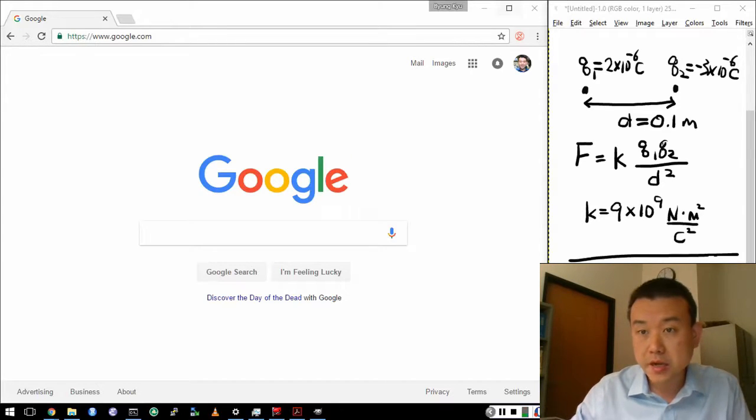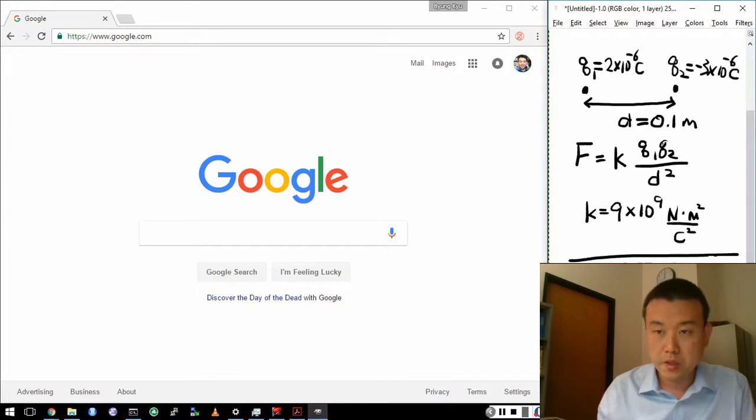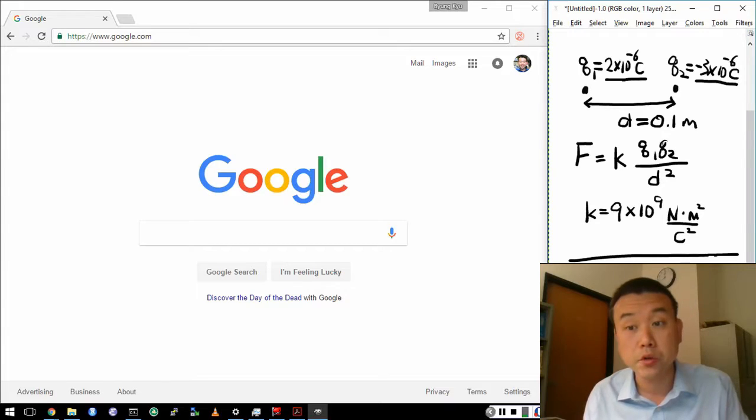So here's the setup. Let's say you are given two charges, Q1 and Q2, with amount of charge of 2 times 10 to the minus 6 coulomb (or 2 microcoulombs) and minus 3 times 10 to the minus 6 coulomb (or minus 3 microcoulombs). They are separated by distance 0.1 meters.